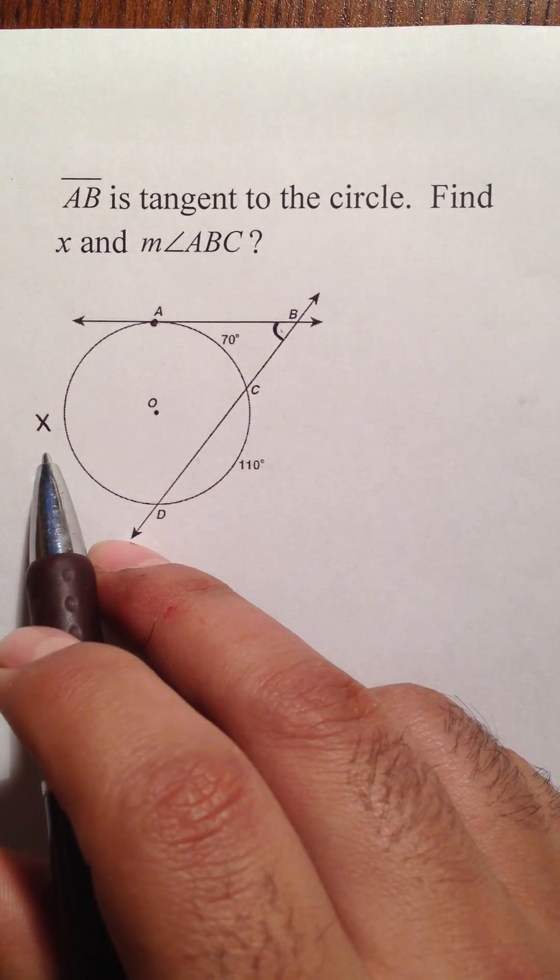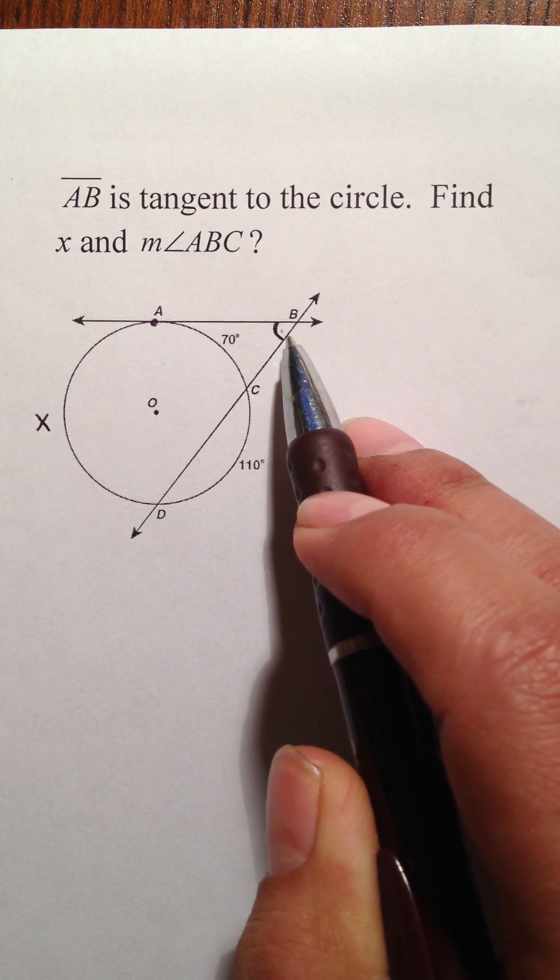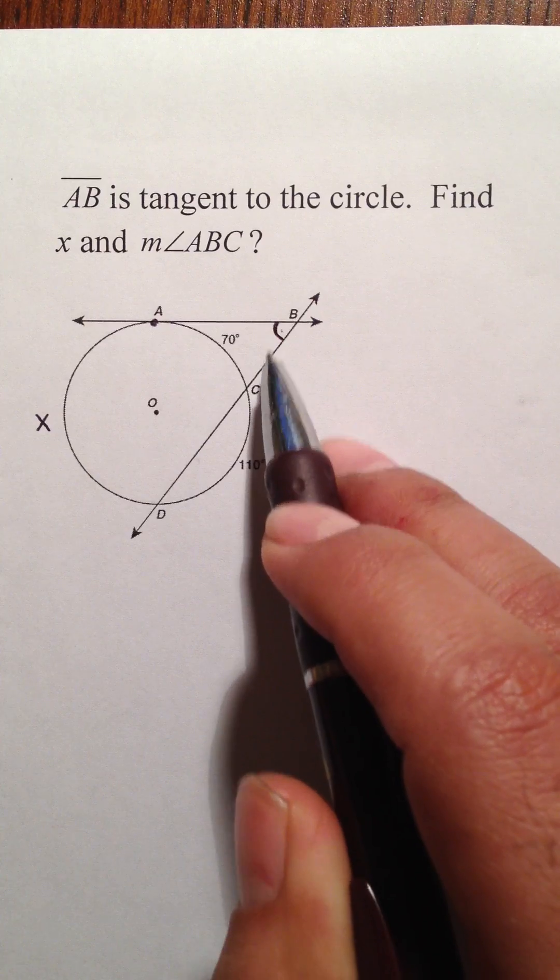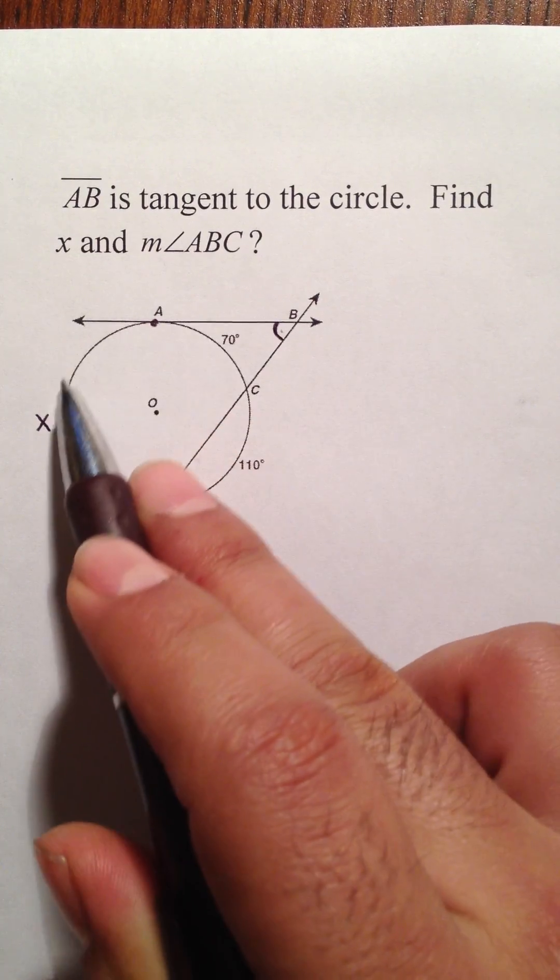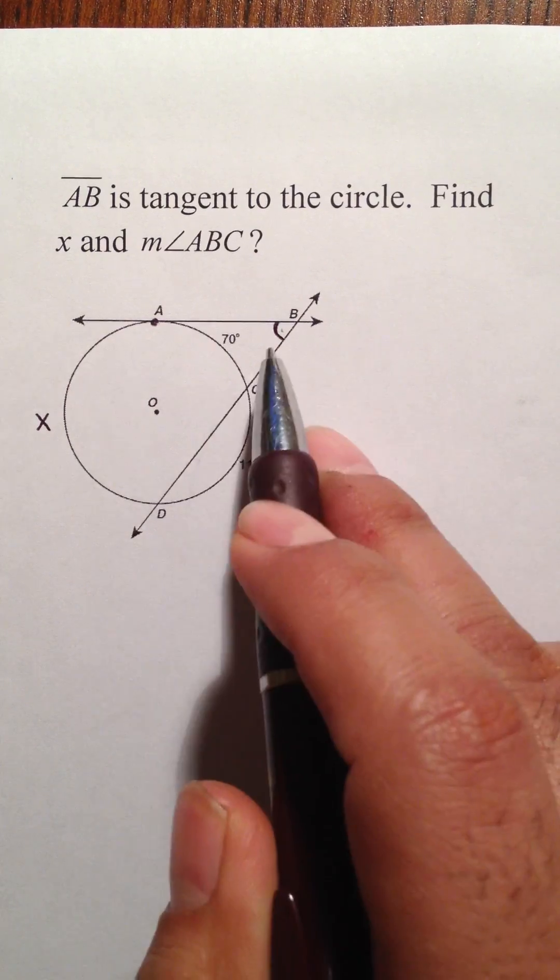The reason why I'm having you find X is because you have to know what X is in order to find this angle way out here. Because to find exterior angles outside of circles, you need to know the arcs that are inside these two rays.